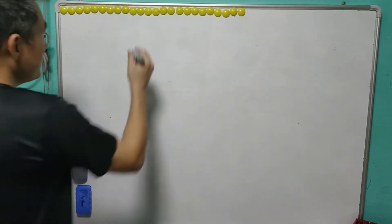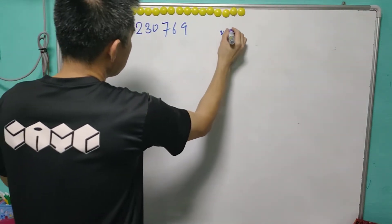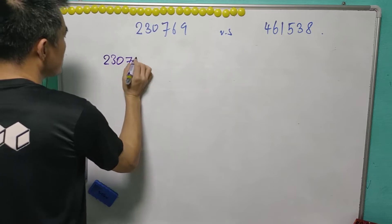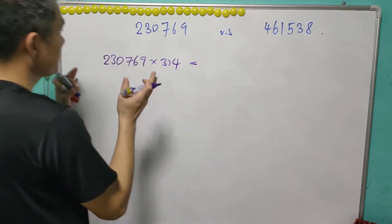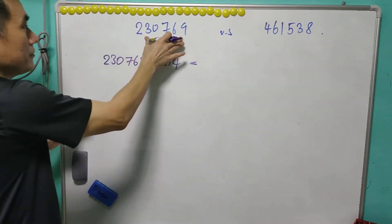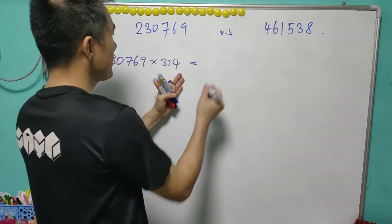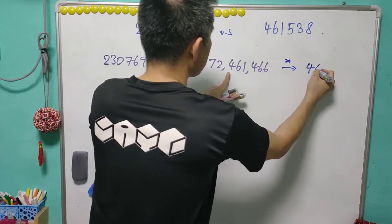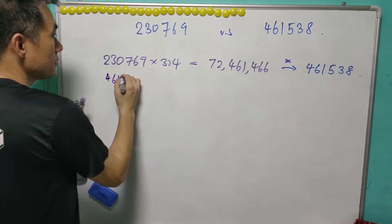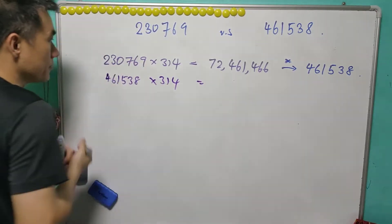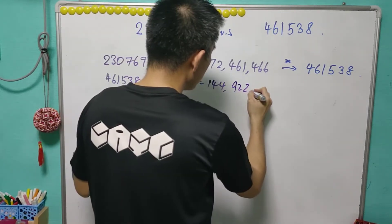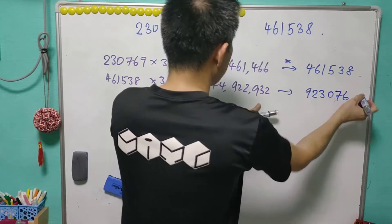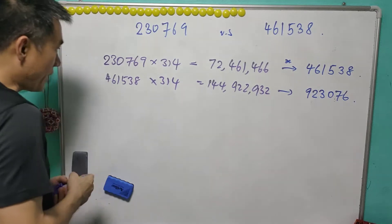For the next example we have two related numbers: 230769 and 461538. Sometimes when you multiply 230769 by some number and do the operation, you may not get back the same number but you get its 'good friend.' For example, the result leads to 461538. Then multiplying 461538 by 314 gives a result that after the operation yields 923076 — which brings you back to this family of numbers.